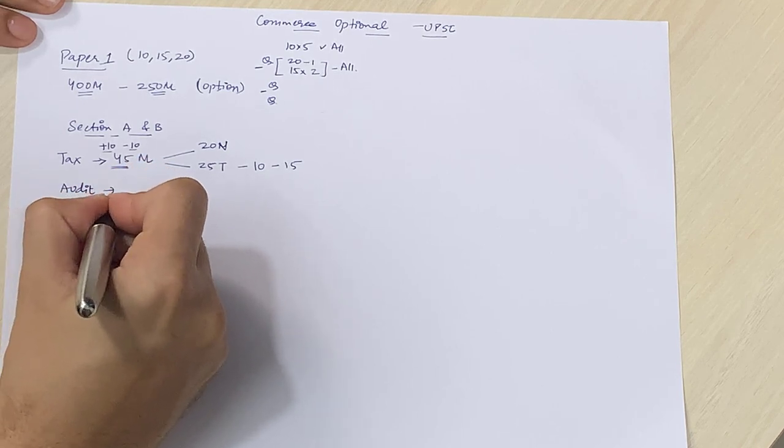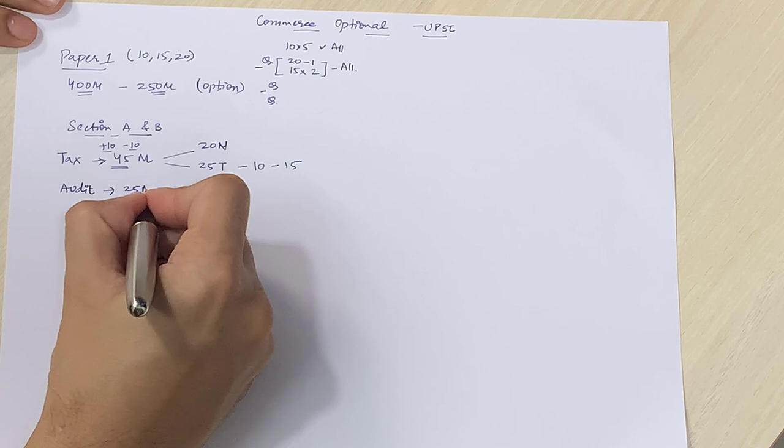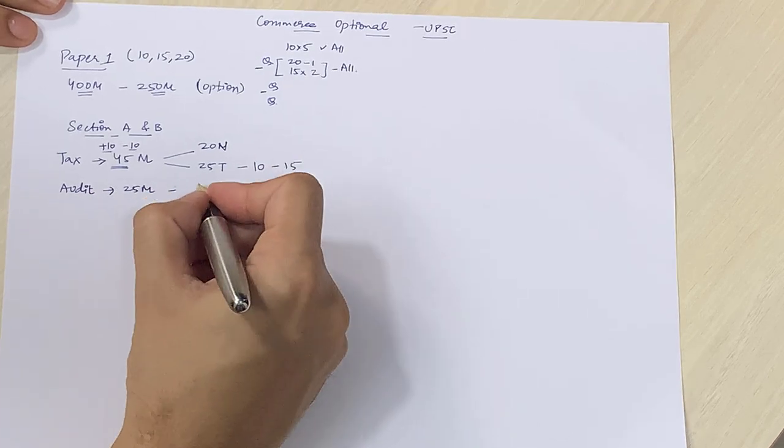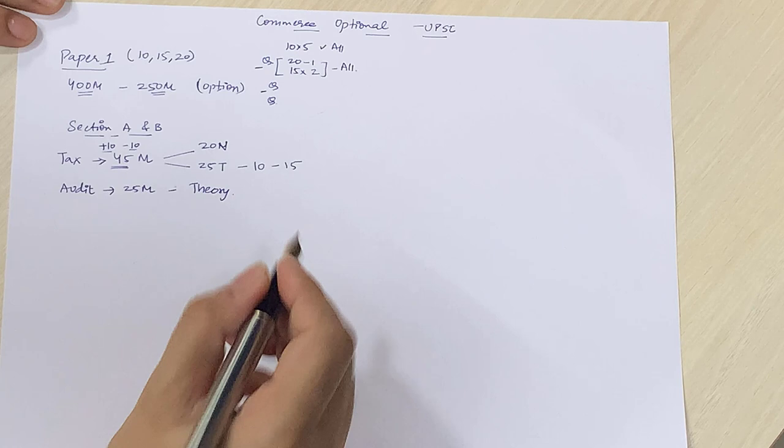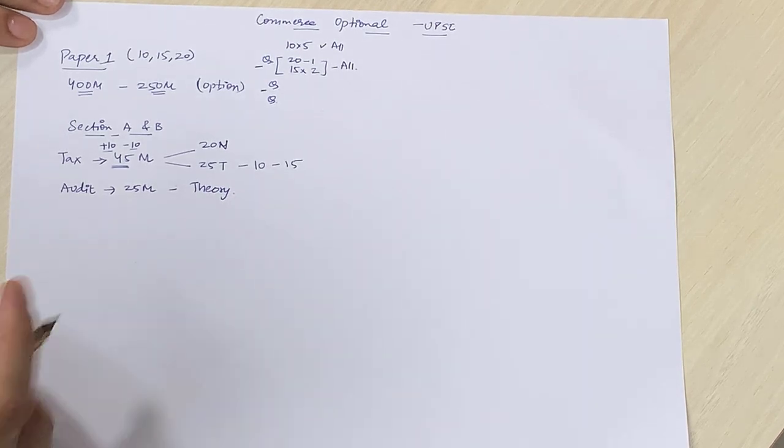Second aatay hain audit. Audit mein total 25 marks ke questions aate hain. And all these are from theory only. Numerical questions nahi aate hain audit mein.